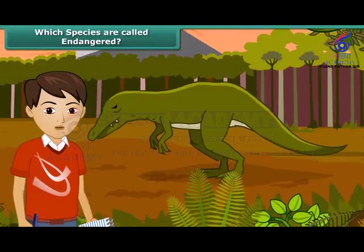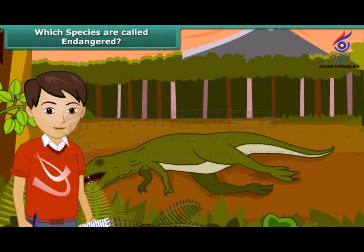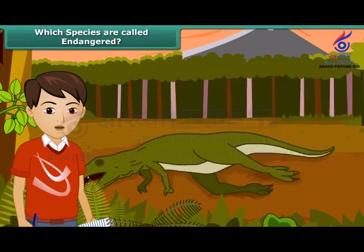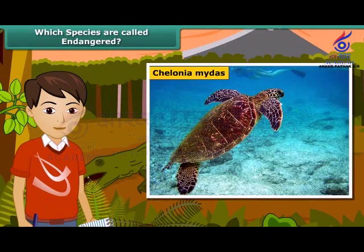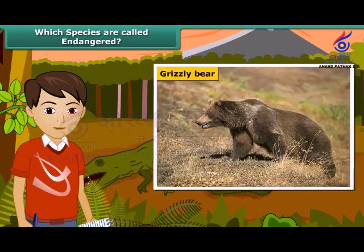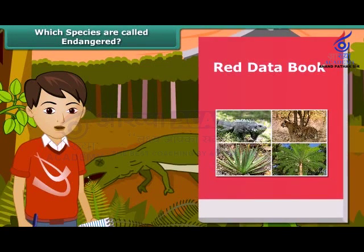You must have heard about dinosaurs — they existed hundreds of years ago but are extinct now. Many animals and plants have become extinct, whereas some are on the verge of extinction. Species whose numbers are diminishing to a level that they might face extinction are known as endangered species. The Red Data Book is the source book which keeps a record of all endangered animals and plants.